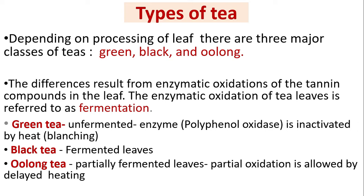Types of tea: depending on processing, there are three major classes — green, black, and oolong tea. The differences result from enzymatic oxidations of the tannin compounds in the tea leaf; this enzymatic oxidation is referred to as fermentation. Green tea is unfermented — the enzyme polyphenol oxidase is inactivated by heat or blanching. Black tea uses fully fermented leaves. Oolong tea uses partially fermented leaves, with partial oxidation allowed by delayed heating.